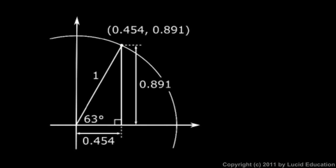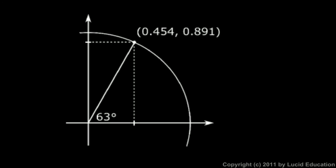This side, the length of this side, has to be the y coordinate, 0.891. Then you should also see that if this point up here has these coordinates, we can also think of those points on our x and y-axis.